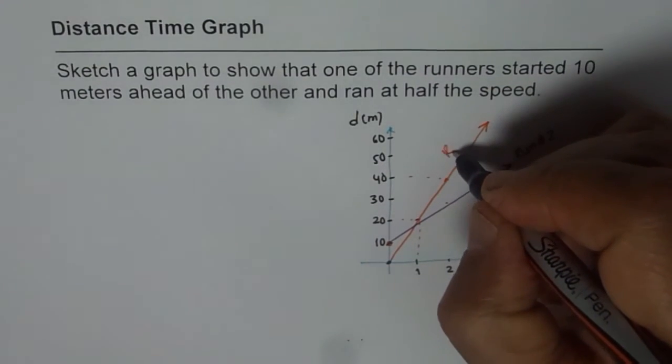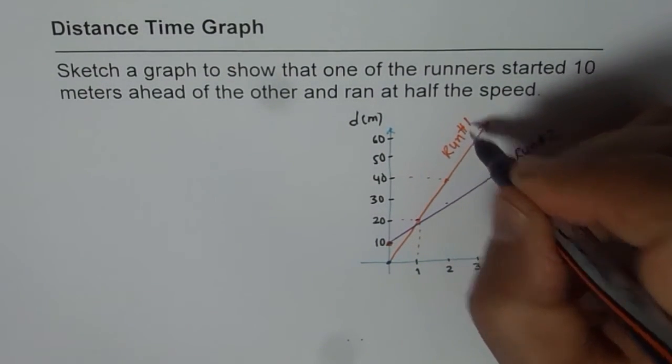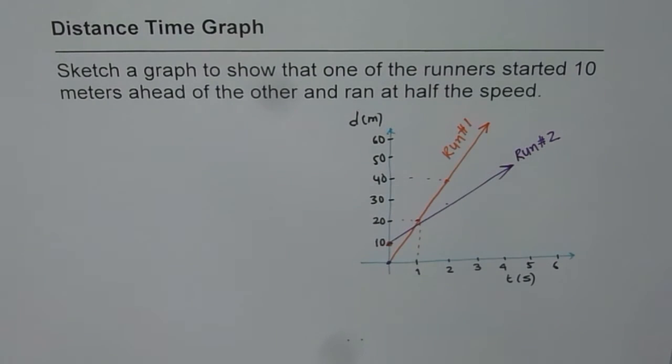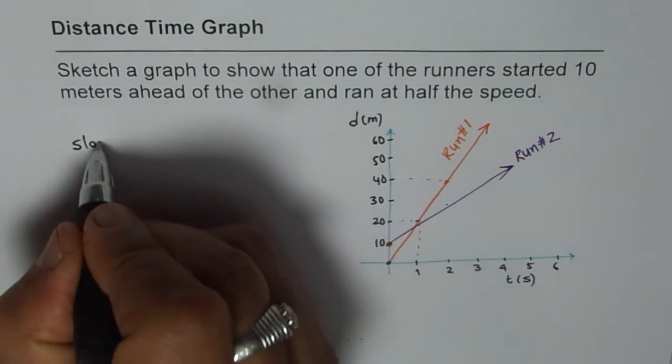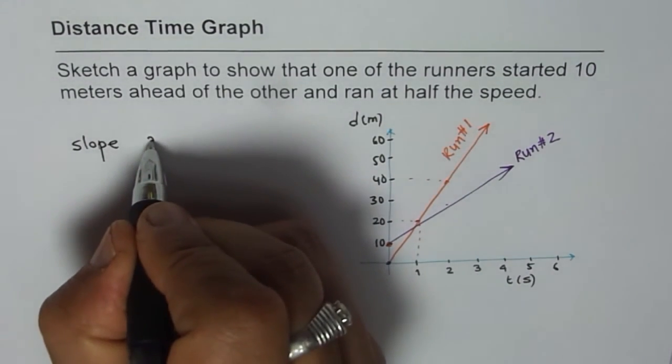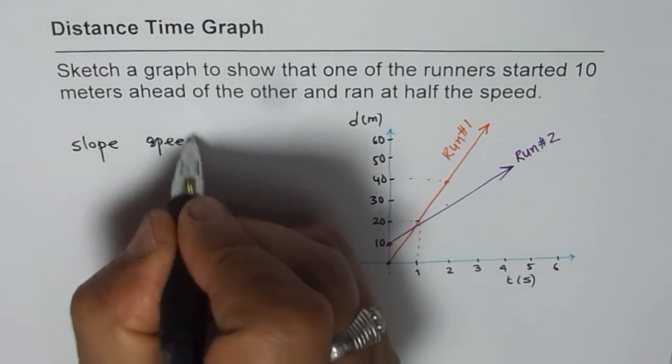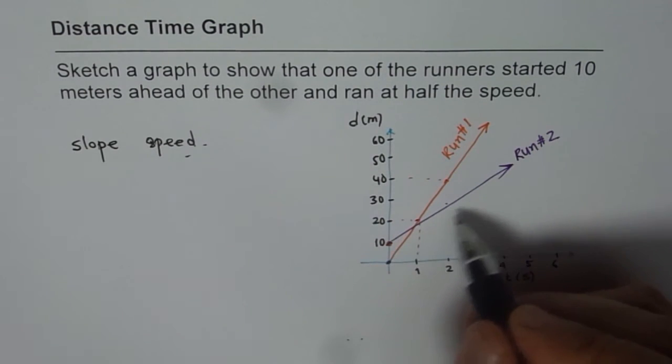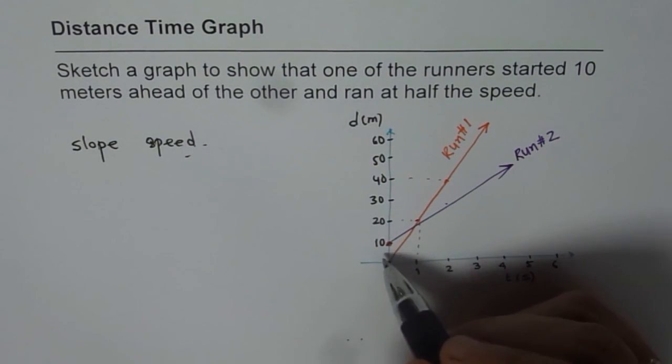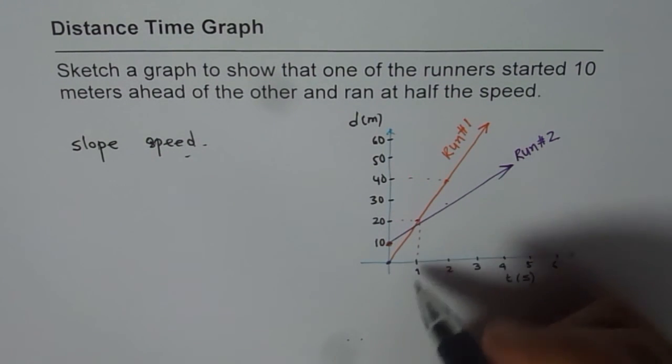And here we have runner number 1 who is running at twice the speed. What we notice here is that distance along the y-axis shows you the initial distance as change in starting point, and slope represents speed. If the slope is twice than the other, then the speed is twice.